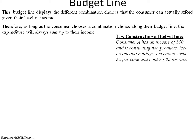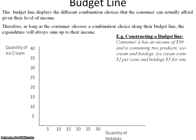When we look at an indifference curve, we're looking at quantities of two possible goods the consumer can choose between. This means we need to express our budget line not in dollars and cents, but in terms of units of goods. In our example, we have ice cream and hot dogs. Consumer A has an income of $50. The price of ice cream is $2 per cone and the price of a hot dog is $5 each. We need to ask two simple questions to draw this budget line.